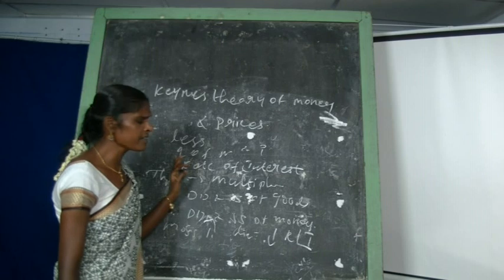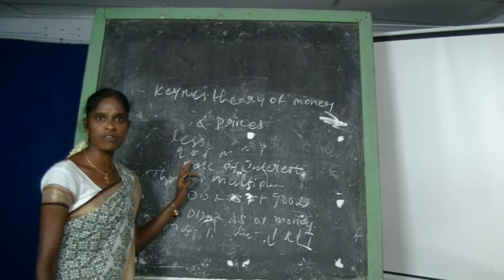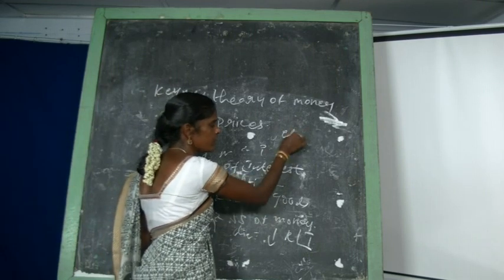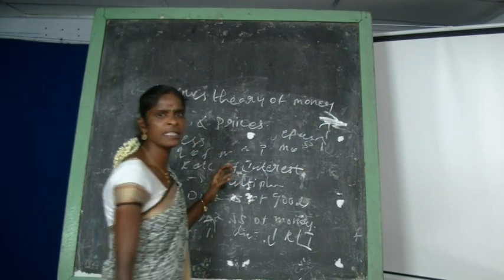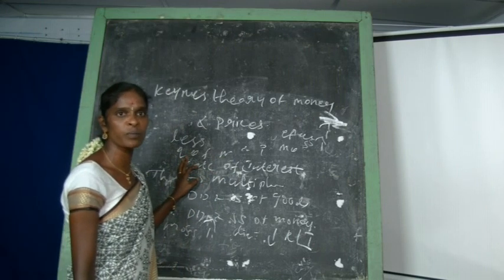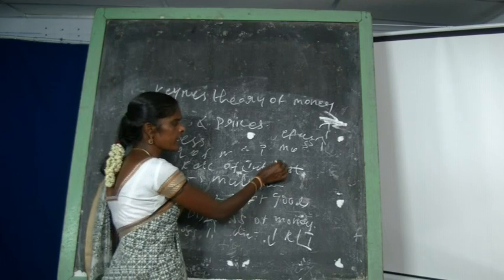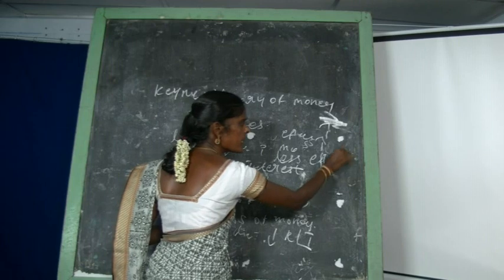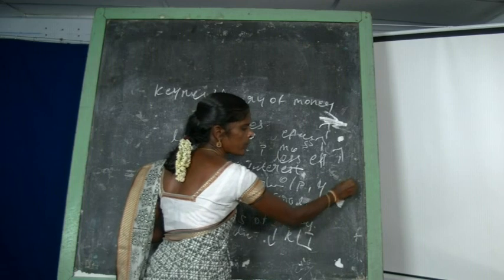In Keynes's theory of money and prices, increasing effective demand leads to increasing money supply. The increase in effective demand does not have a proportionate relationship with the increase in price level. Rather, when the economy is less than full employment, increasing effective demand leads to increasing output, income, and employment.